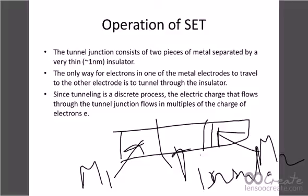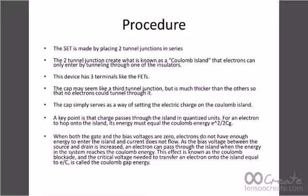The tunnel junction consists of two metal pieces separated by a very thin insulator. The only way for an electron in one metal electrode to travel to the other is to tunnel through the insulator. Tunneling is a discrete process. The electric charge that flows through the tunnel junction flows in multiples of the electron charge. SET is made by placing two tunnel junctions in series, creating what is known as a Coulomb island that electrons can enter only by tunneling through one of the insulators.